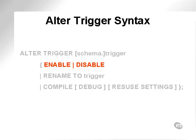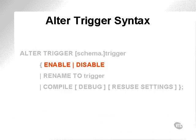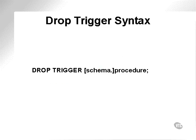The ALTER TRIGGER syntax allows a trigger to be enabled, disabled, renamed, or compiled. You can create, compile, and store a trigger in the database and either permanently or temporarily disable it. To re-enable it, execute ALTER TRIGGER ENABLE. The DROP TRIGGER command is very simple — you simply type DROP TRIGGER trigger_name.